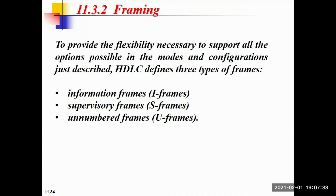The third type of frame is the unnumbered frame, or U-frame. The U-frame is used for link establishment, termination, mode setting, and other control functions. U-frames do not have any sequence number or data field. The first two bits of the control field with values 1,1 identify the frame as a U-frame.